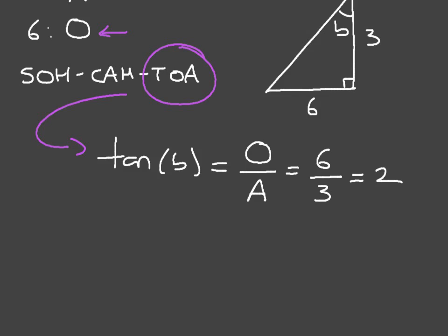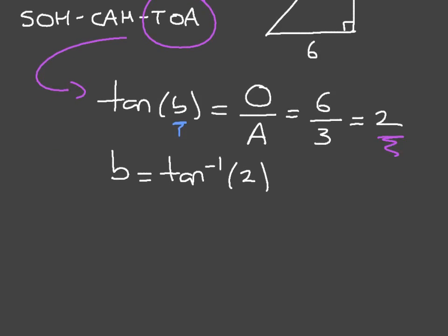To obtain the actual angle which is inside the tangent — in other words, to obtain B and extract it from tan — we use the inverse tan function. So we can write B is equal to inverse tan of 2. Using your calculator and rounding to one decimal place, you'll find B is equal to 63.4 degrees.